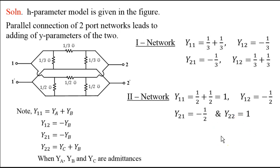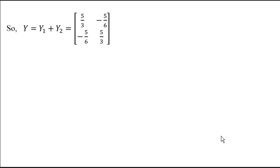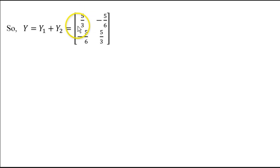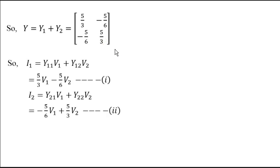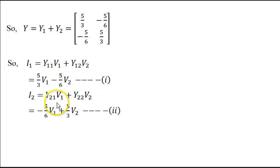This is how we determine the Y matrices for both networks. Now we combine the matrices: Y equals Y1 plus Y2. Adding the individual Y parameters, the combined matrix becomes: Y11 = 5/3, Y12 = -5/6, Y21 = -5/6, Y22 = 3. We can write the governing equations: I1 = Y11·V1 + Y12·V2, which gives I1 = (5/3)V1 − (5/6)V2, and similarly for the second equation I2.